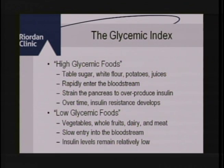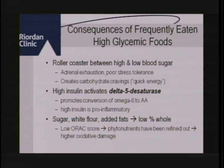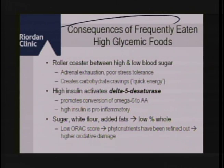High-glycemic foods — table sugar, white flour, white potatoes, juices, soda pop — rapidly enter the bloodstream and strain the pancreas to overproduce insulin. Over time, insulin resistance develops. Low-glycemic foods like vegetables and whole foods cause slow entry into the bloodstream, keep blood sugar level, and reduce diabetes risk. Additionally, insulin will convert omega-6 to arachidonic acid, which triggers more inflammation. Sugar is a pro-inflammatory food.